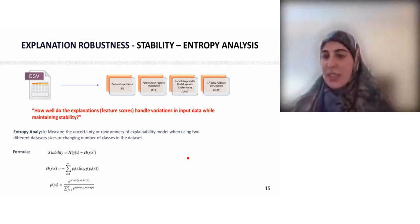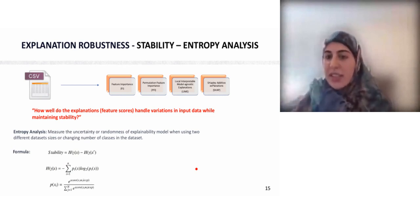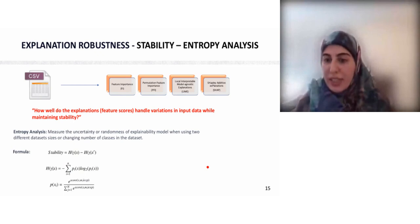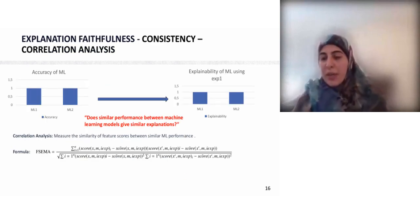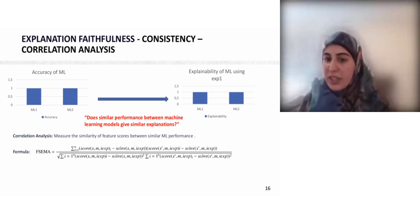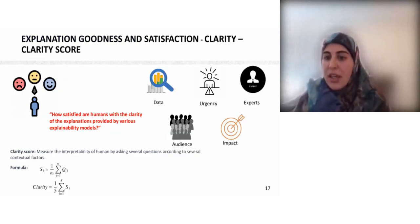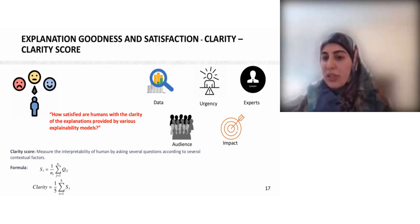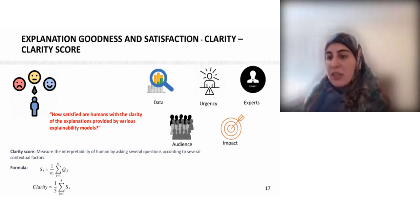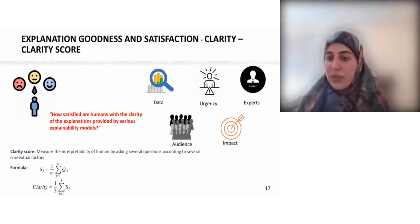The third property is stability, where we proposed entropy analysis to measure the uncertainty or randomness of a model when using two different dataset sizes or different numbers of classes. The fourth metric property, consistency, uses correlation analysis to measure the similarity between similar machine learning model performances. The last metric is clarity, where we developed an eclectivity score according to different contextual factors such as data, urgency, experts, audience, and impact — measuring how well a human interprets the explanations by answering several questions across contextual factors.